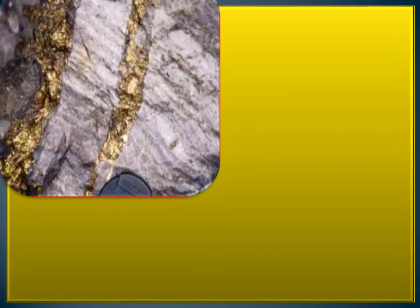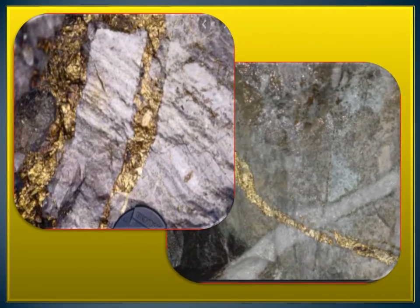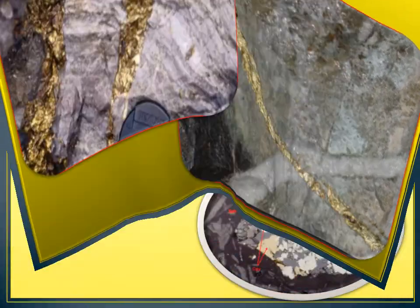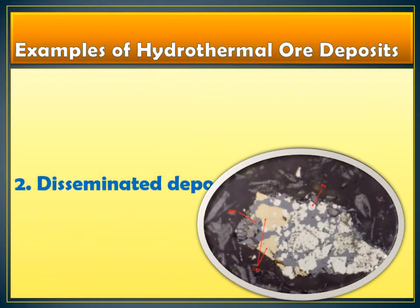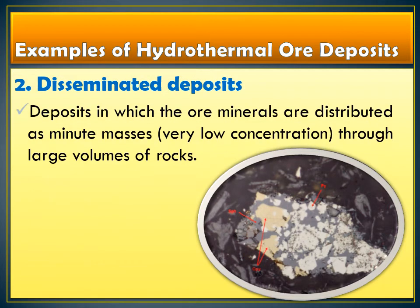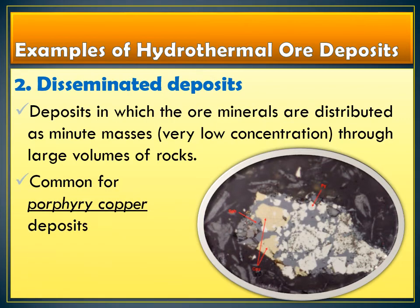Here are some examples of a vein type hydrothermal ore deposit. Notice that they are narrow just like that. Another example under hydrothermal ore deposit is the disseminated deposits. In this case, ore minerals are distributed as minute masses — meaning they are in a very low concentration — through large volumes of rock. One best example here is the porphyry copper deposit. If you notice the picture, the rock has a very big structure or size, however we can only find a small porphyry copper deposit in it.